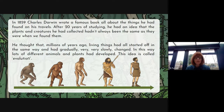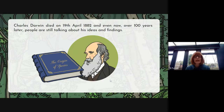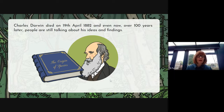This idea is called evolution and we will be looking more at evolution in our following lessons. Charles Darwin died on the 19th of April 1882 and even now, over 100 years later, people are still talking about his ideas and findings. In fact only last week in the news there was an article about a scientist who had discovered the answer to a question that had been perplexing Darwin throughout his time studying nature and evolution.